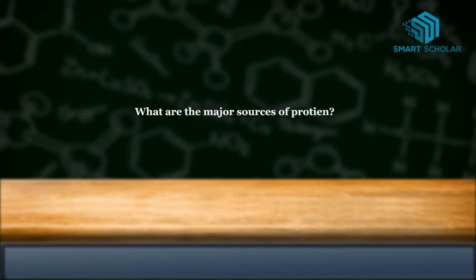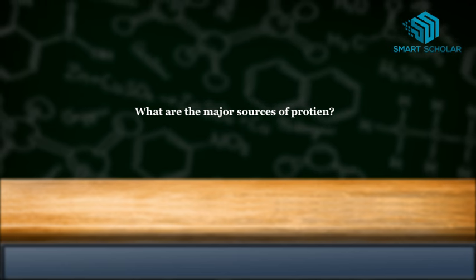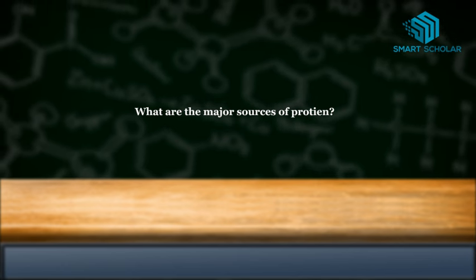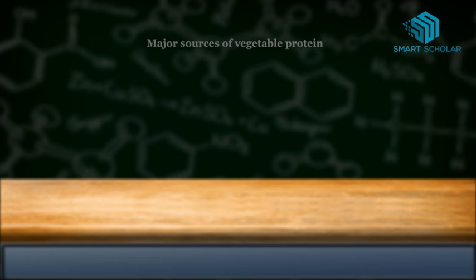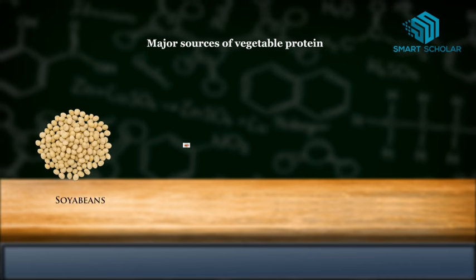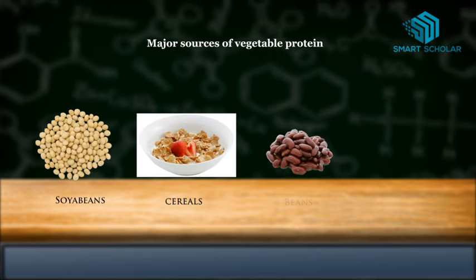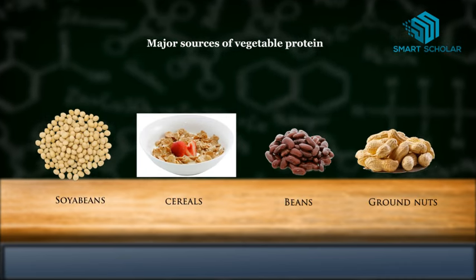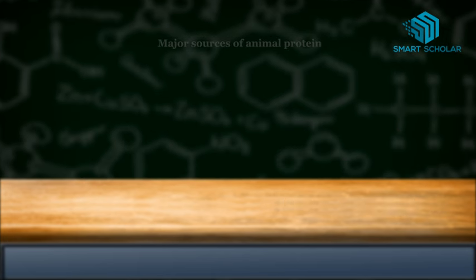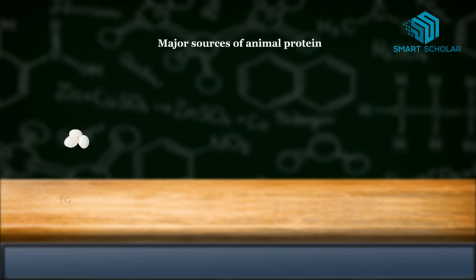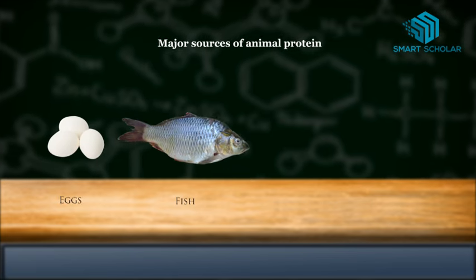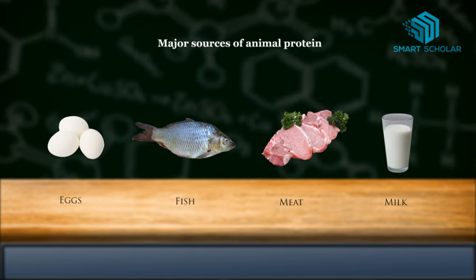What are the major sources of protein? The major sources of vegetable protein are soya bean, cereals, beans, and ground nuts. Major sources of animal protein are egg, fish, meat, and milk.